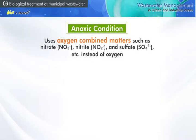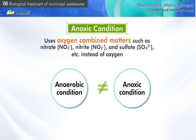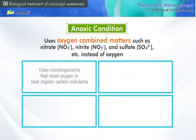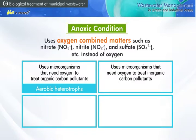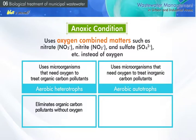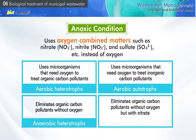Some anaerobic bacteria use matters combined with oxygen, like nitrate, nitrite, and sulfate, instead of oxygen. In wastewater treatment, this is called anoxic condition to distinguish it from anaerobic condition. For example, aerobic heterotrophs remove organic carbon pollutants needing oxygen; aerobic autotrophs treat inorganic pollutants needing oxygen; anaerobic heterotrophs treat organic carbon without oxygen supply; and anoxic heterotrophs use nitrate instead of oxygen to treat organic carbon.